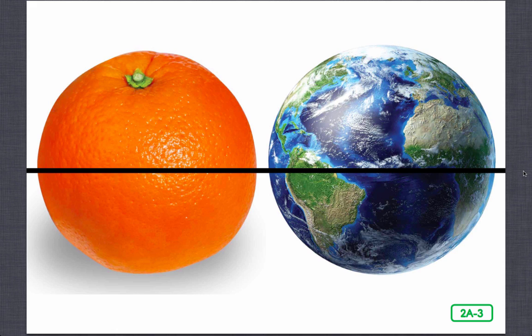Earth can also be divided into two halves called the eastern and western hemispheres. These hemispheres are divided by the prime meridian, an imaginary line used to split Earth into eastern and western halves.